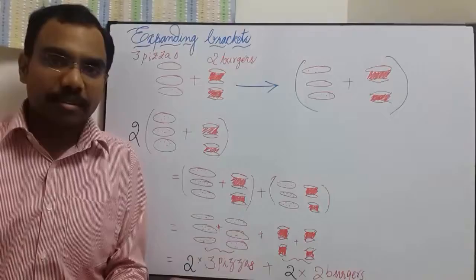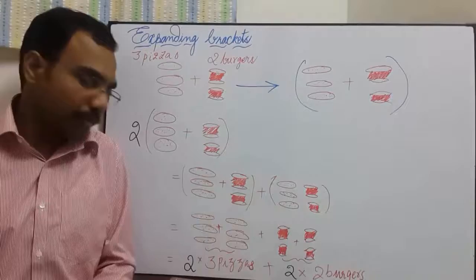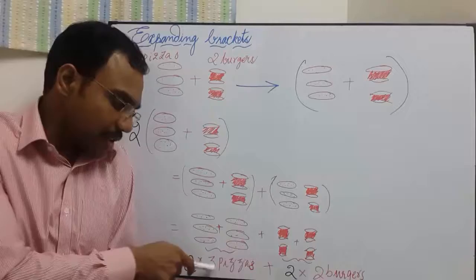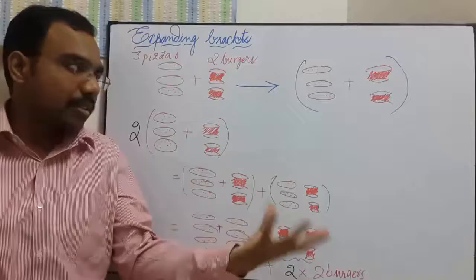In your previous lesson, you learned about collecting like terms. Let us collect all pizzas together and all burgers together. So here, you can notice two sets of 3 pizzas and two sets of 2 burgers. We can write it as 2 times 3 pizzas and 2 times 2 burgers. Let us use this as an example for our further study of expanding brackets.